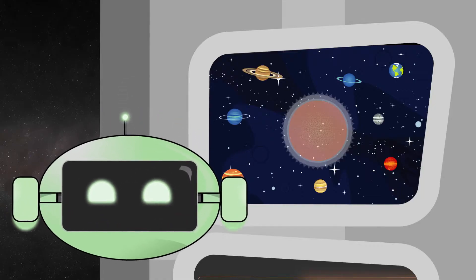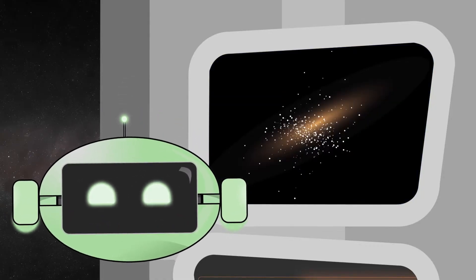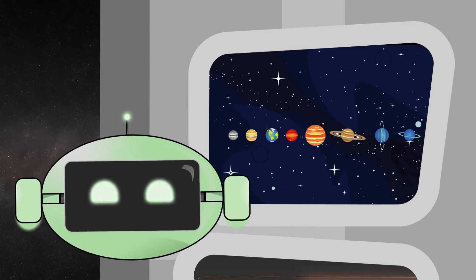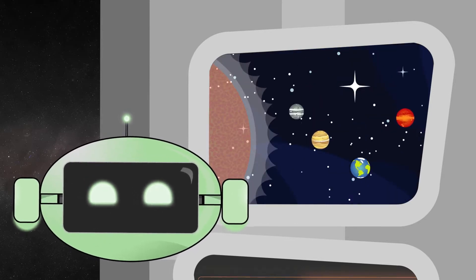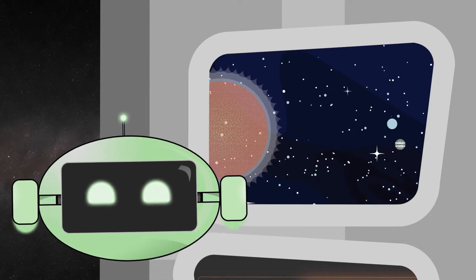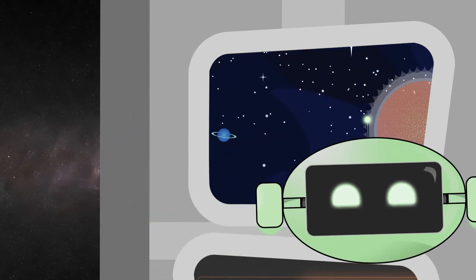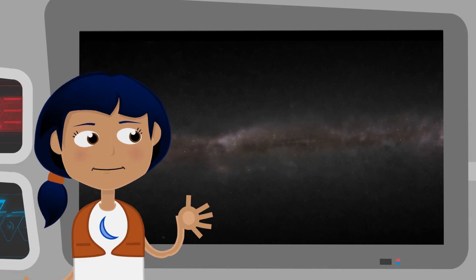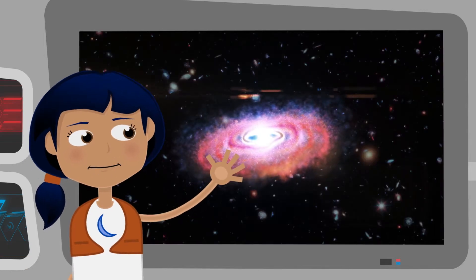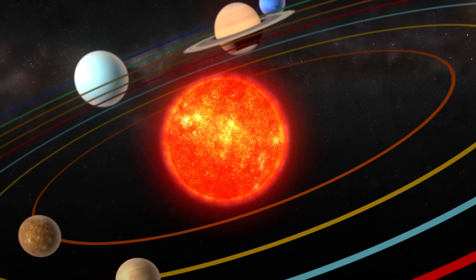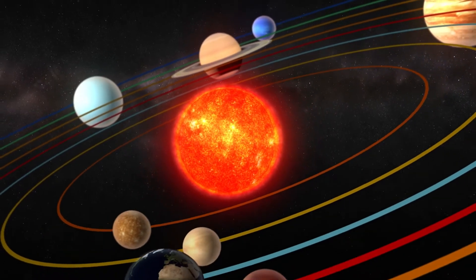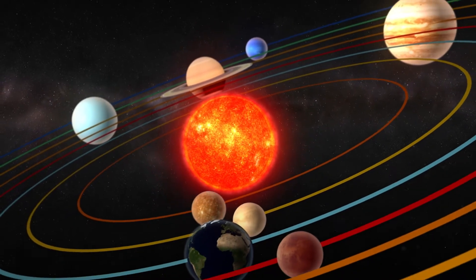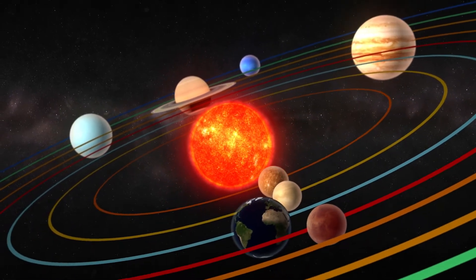Our solar system is a part of the Milky Way galaxy. There are eight planets that all revolve around our sun. They all have different sized orbits. Some are close to the sun and some are very far away. That's right. Our solar system is located in the outer spiral arm of the Milky Way galaxy. Within our solar system, each planet is revolving around the sun at different speeds and different distances from the sun.